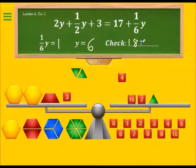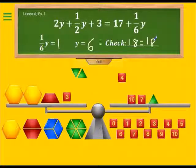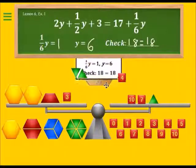On the right side, we have ten and seven is 17, and the green block, which is a sixth of y, which is 18. So both sides of the equation have the value of 18, and so that shows that our answer of one-sixth of y equals one, and y equals six is correct. Now we can also pull down the pull tab to verify the answer.